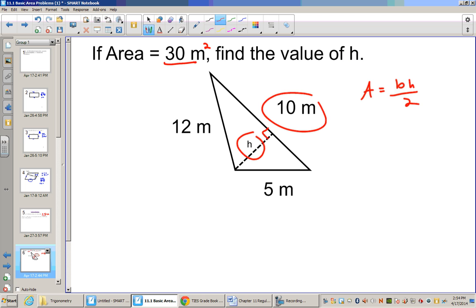We'll insert what we know. We know area is 30, the base is 10, and the height divided by 2. Now to simplify this, 10 divided by 2 is 5.